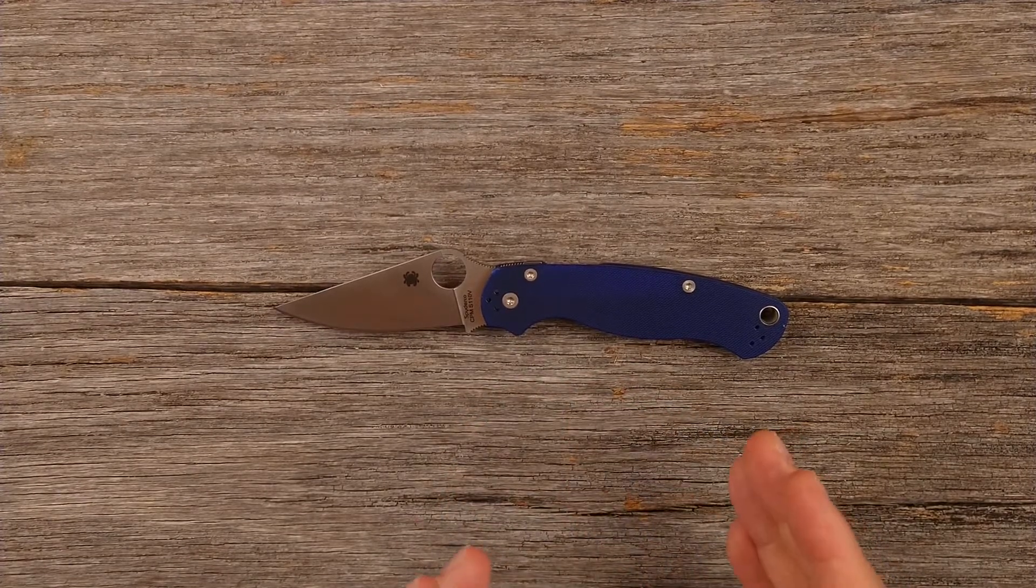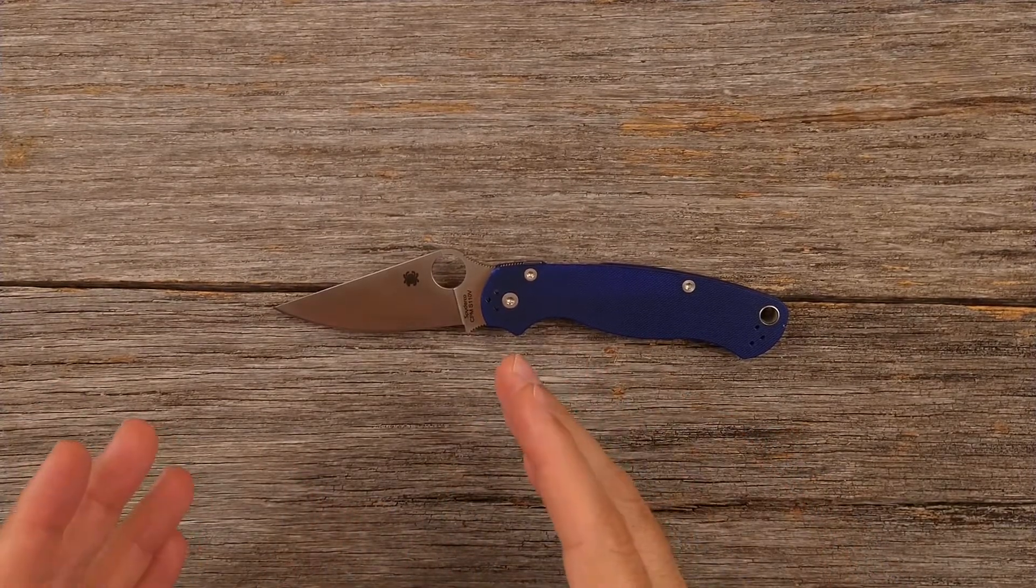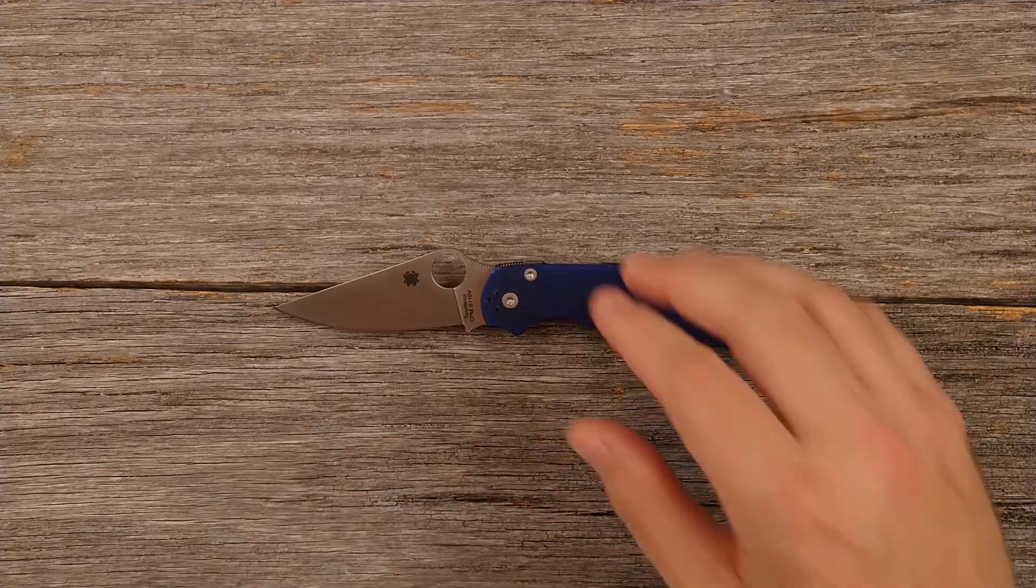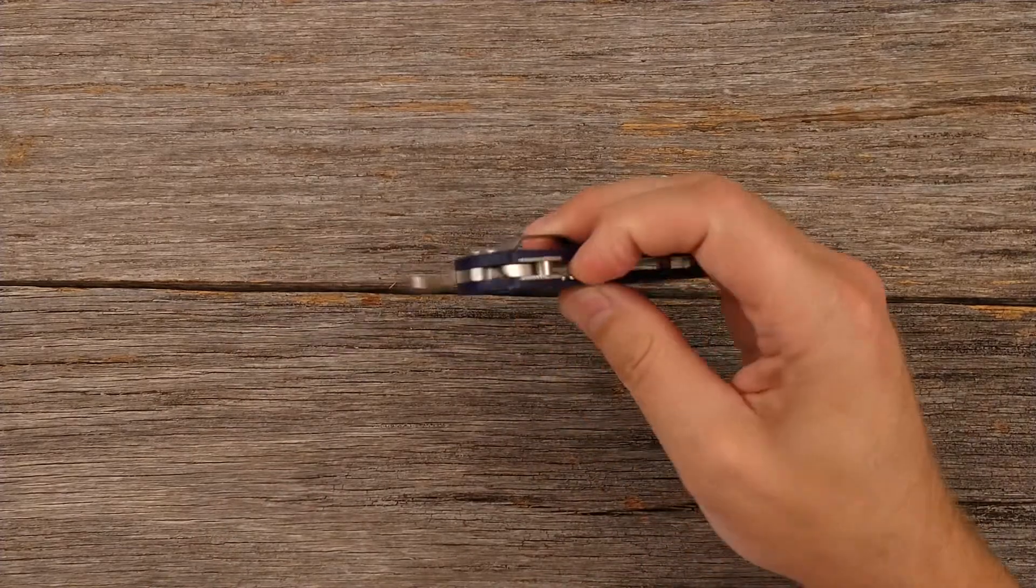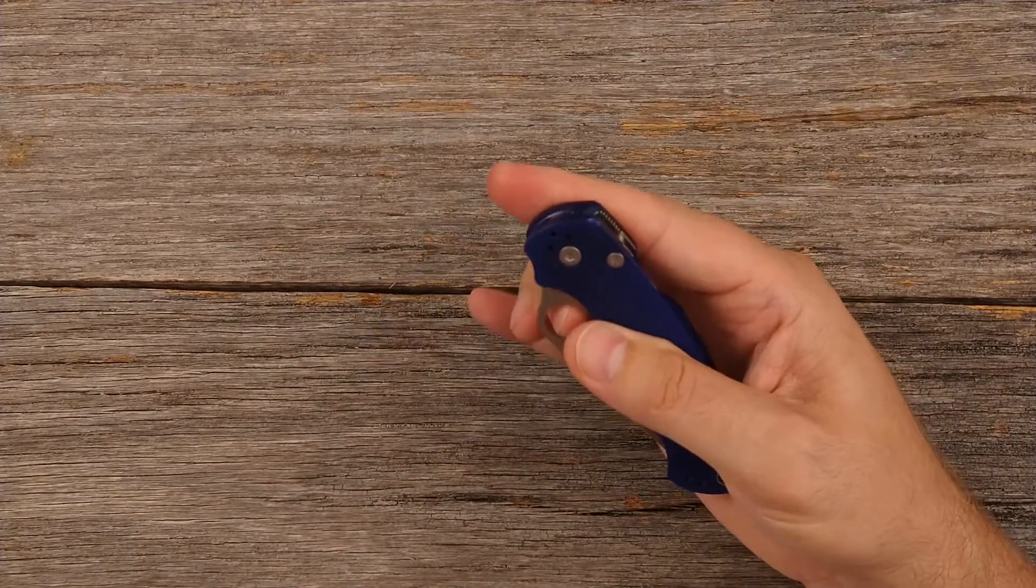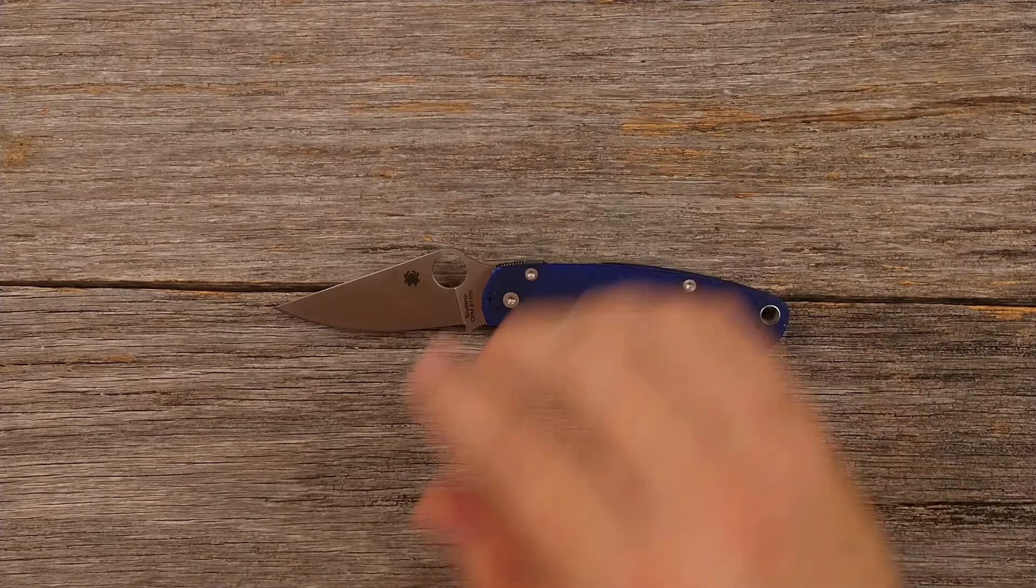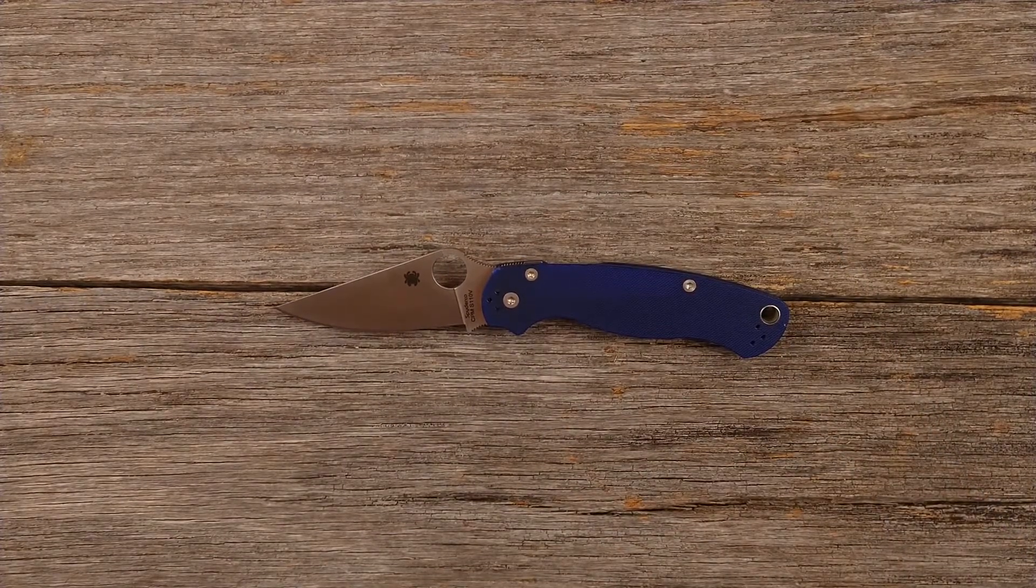So the question is, that Ontario Rat One is a $30 knife. This is a $200 knife. Is there a $170 difference in the quality of those two knives? I mean, honestly, no, there's not. I mean, there's no doubt that this Spyderco is a better knife than that Ontario Rat One. But is it worth $170 more?